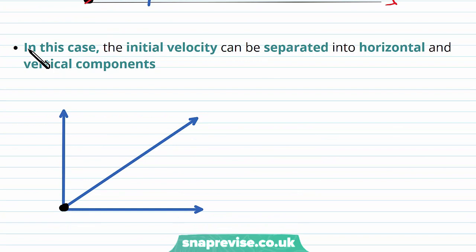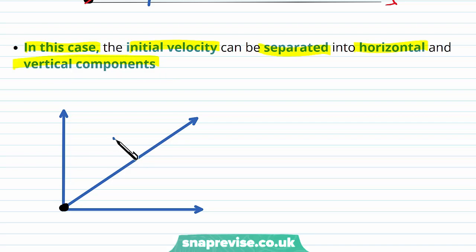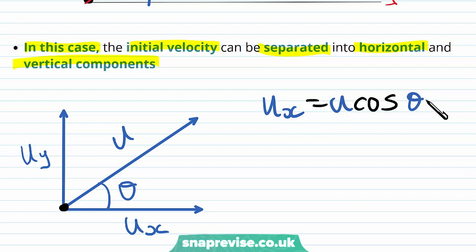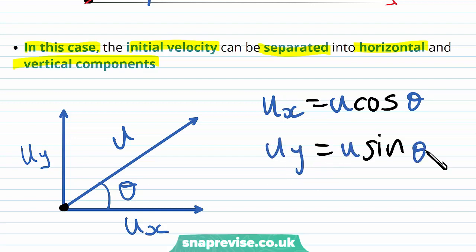In this case the initial velocity can be separated into horizontal and vertical components. Starting with initial velocity u at angle theta, we get a vertical component uy and a horizontal component ux. So ux equals u cos theta, and uy equals u sin theta.